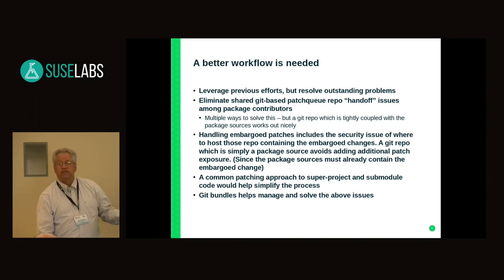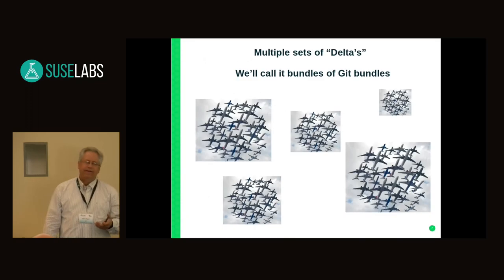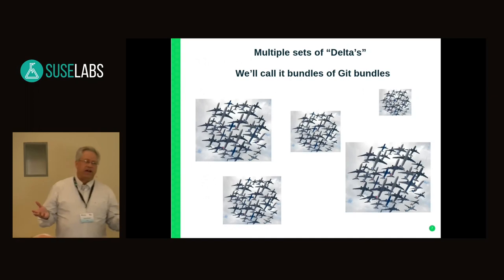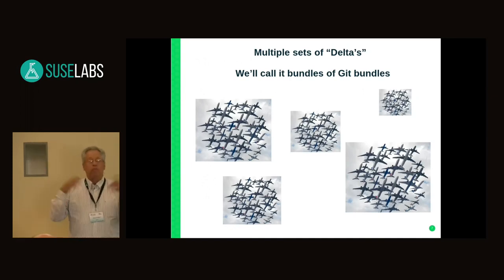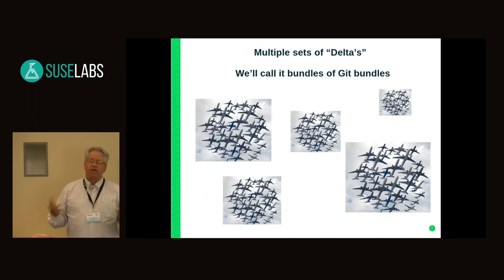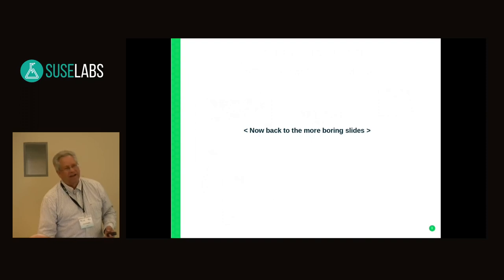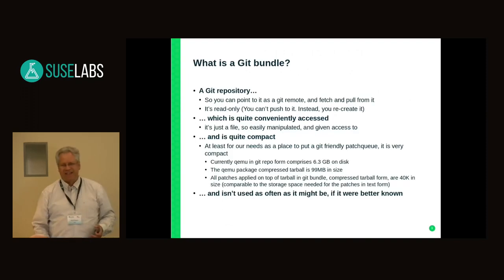Git bundles help with all these issues. I flew over here on Delta, so we have deltas, which are patches, and we have multiple sets of those covering all those different sub-bundles. I call that a bundle of bundles — that's just a term I came up with.